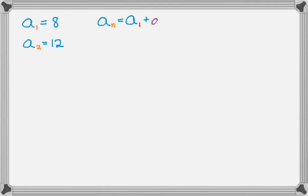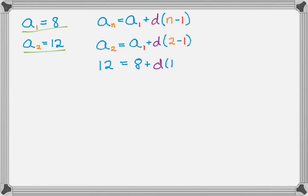The formula is aₙ = a₁ + d(n-1). So a₂ = a₁ + d(2-1). Now a₂ is 12, so let's plug that in. And a₁ is 8, so let's plug that in. Then it's plus d times 1.